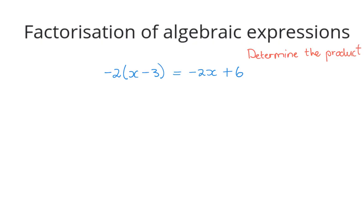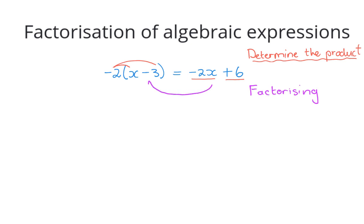If you multiply the bracket out, minus two with x you get minus 2x, and minus 2 times minus 3 is plus 6 — then you are determining the product. Changing an expression in factor form to an expression that consists of terms. Factorizing is the inverse process: you are changing an algebraic expression with terms to an expression that consists of factors.